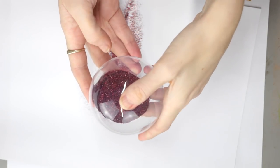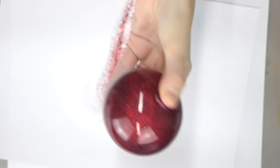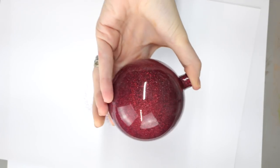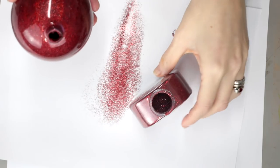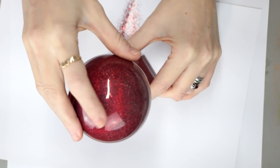We can then get our bauble and again we're going to place our thumb over and give it a really good shake, and we're going to cover the whole bauble with the glitter. We can then get our glitter pot and decant the excess glitter back into it. And we're going to be using some of the Cosmic Shimmer Pixie Powder.